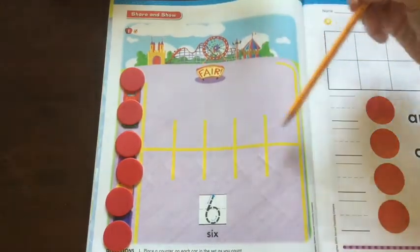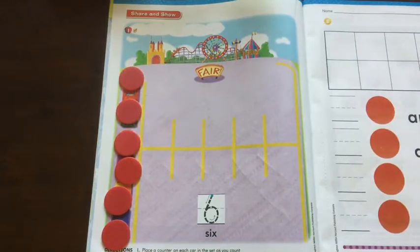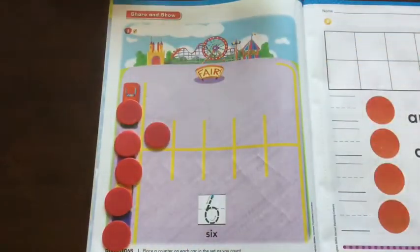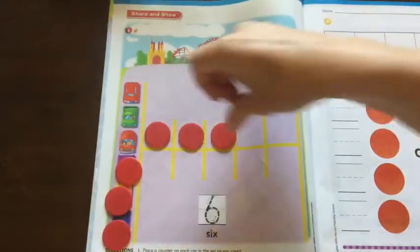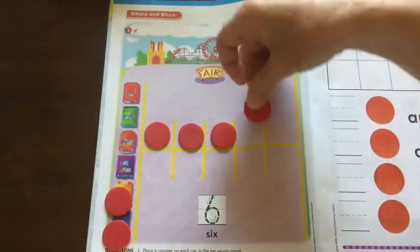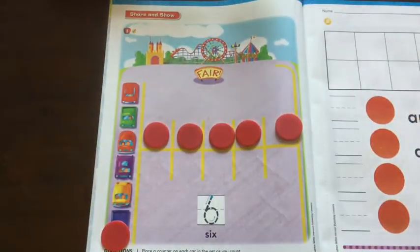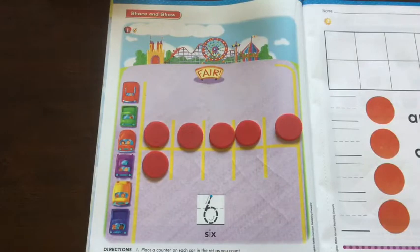We have 1, 2, 3, 4, 5, 6, 7, 8, 9, 10 spaces. So let's move our cars to the parking lot. Starting with number 1 space. 1, 2, 3, 4, 5, 6. We have 6 spots.